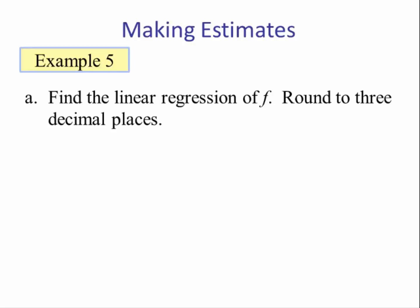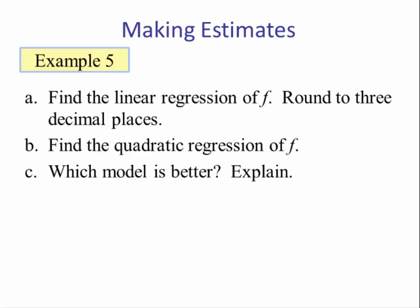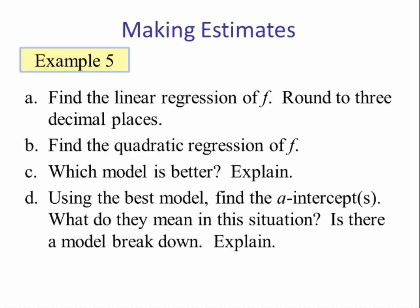a) Find the linear regression of f, round to three decimal places. b) Find the quadratic regression of f. c) Which model is better? Explain. And d) Using the best model, find the a-intercepts. What do they mean in this situation? Is there a model breakdown? Explain.